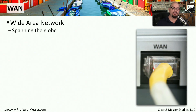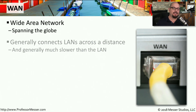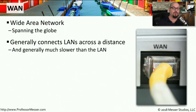For example, if you're connecting to another city or another country, then you're probably using a wide area network, or a WAN. This is connecting one local area network at one location to another local area network that is somewhere very far away, geographically speaking.